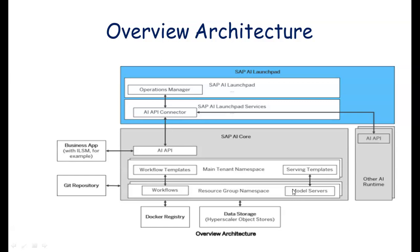The Git repository is used for storing training and serving workflows and templates. The hyperscaler object storage is used for storing input and output artifacts such as training data and models — for example, the SAP BTP object store service.